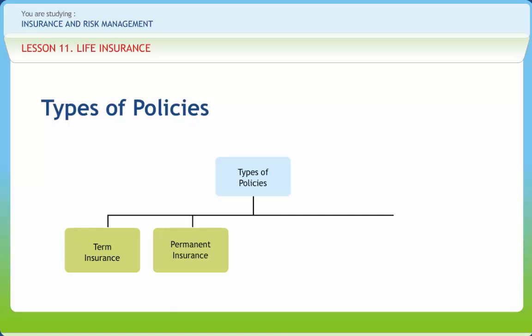Permanent insurance is designed to provide coverage for your entire lifetime, unlike term insurance which provides protection for a specified time period. There are two basic categories of permanent insurance: traditional and interest sensitive, each with a number of variations. Traditional whole life policies are based upon long-term estimates of expense, interest and mortality. The premium, death benefits and cash values are stated in the policy. While insurers guarantee stated benefits on traditional contracts far into the future, they allocate investment earnings differently on interest sensitive whole life in order to better reflect current fluctuations in interest rates.